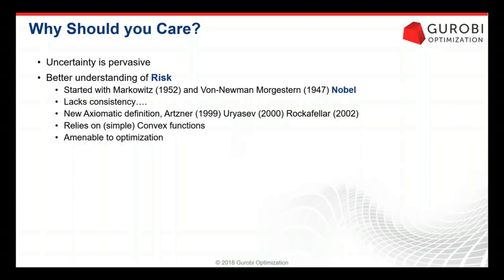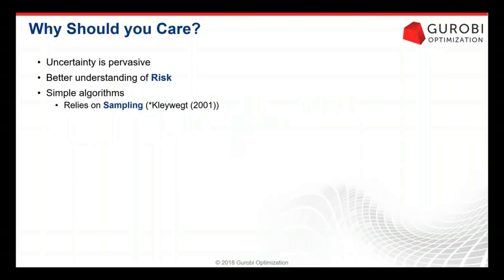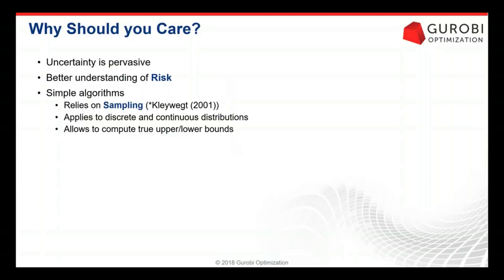Also in the last 20 years, simple algorithms — just like sampling your stochastic problem — have been developed quite a bit. Probably the first to call it a sampling algorithm like that was CleanWed in 2001. These algorithms apply to both discrete and continuous distributions, so they are very general. They allow you to compute true upper and lower bounds in the stochastic optimization problem, and they usually converge very quickly for most practical problems.